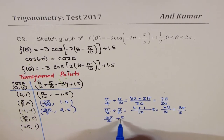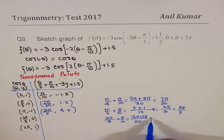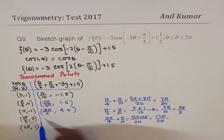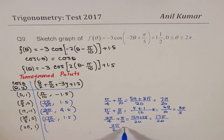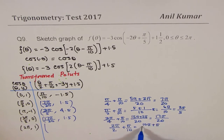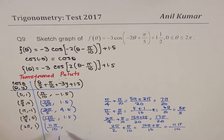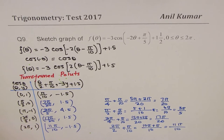For θ = 3π/2: half gives 3π/4, plus π/10. With common denominator 20, that's 15π/20 + 2π/20 = 17π/20. The y-value is 0, giving 1.5. For θ = 2π: half is π, plus π/10 gives 10π/10 + π/10 = 11π/10. The y-value is -3 × 1 + 1.5 = -1.5. So the final image point is (11π/10, -1.5).